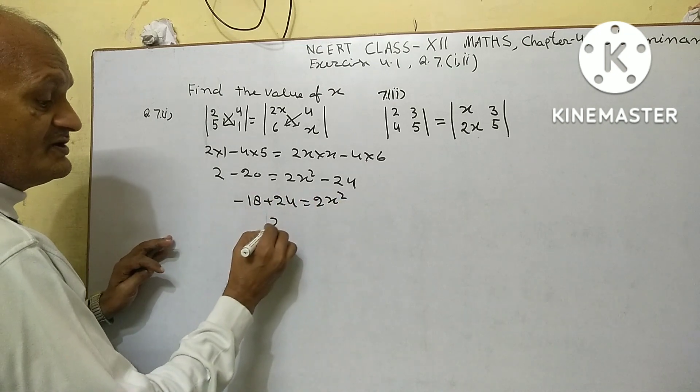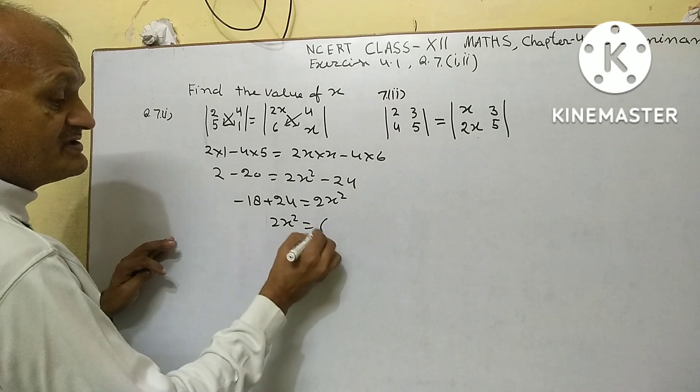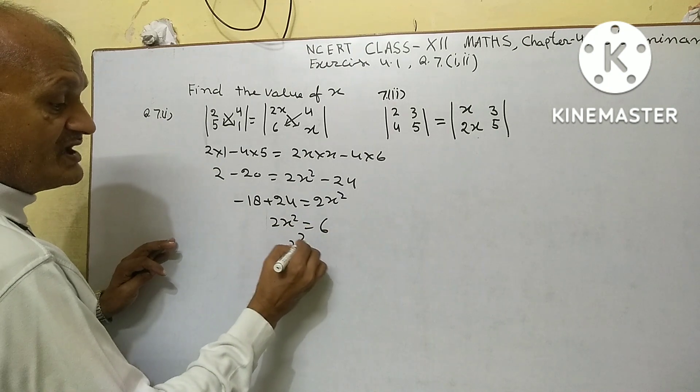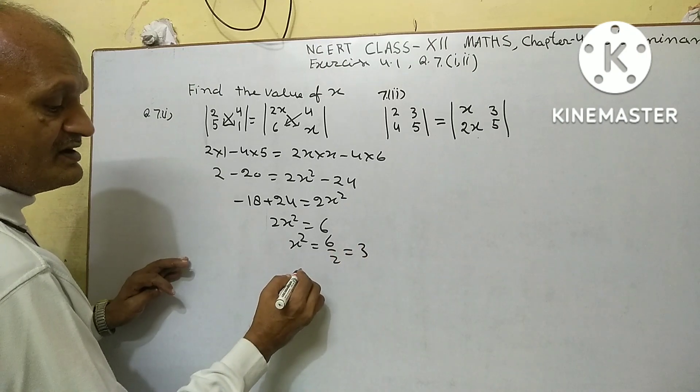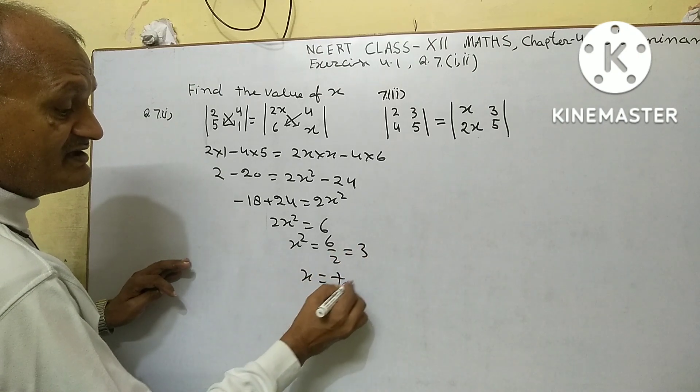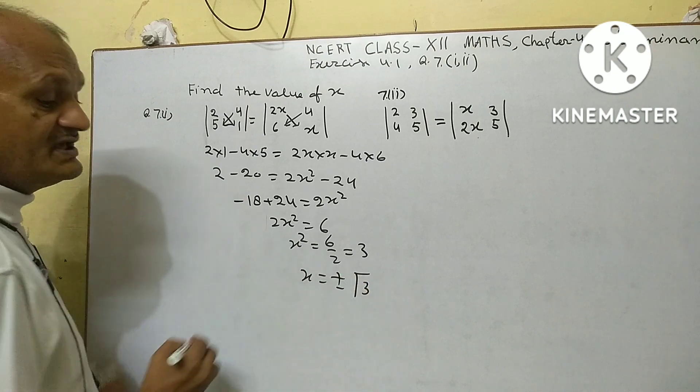And 2x squared equals 6. x squared equals 6 upon 2 equals 3. Now x equals plus minus under root 3.